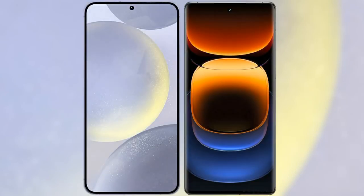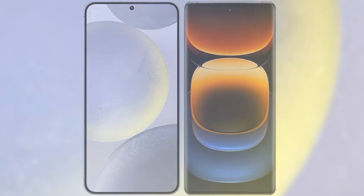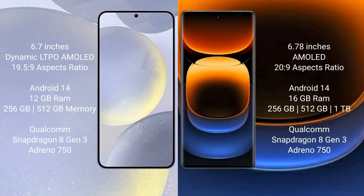I will compare the new Samsung Galaxy S24 Plus with the Vivo iQOO 12 Pro. The Samsung Galaxy S24 Plus comes with a 6.7-inch Dynamic LTPO AMOLED display with a 19.5:9 aspect ratio. The Vivo iQOO 12 Pro comes with a 6.78-inch LTPO AMOLED display with a 20:9 aspect ratio. Both devices run on the Android 14 operating system.